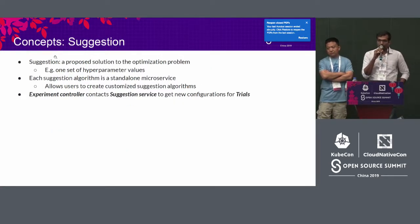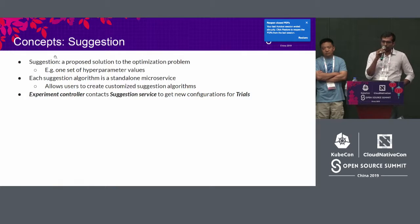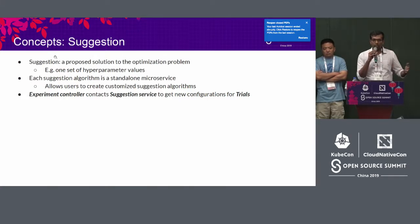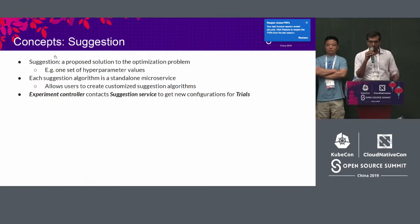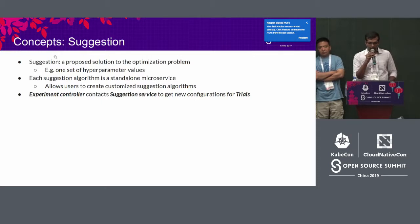The second concept is a suggestion. Once a user submits the experiment config through the Kubernetes API, the experiment controller picks it up and contacts the right suggestion service. A suggestion is one proposed solution to the optimization problem — based on the search space and user settings, the suggestion service provides one proposed solution. Each suggestion algorithm is a standalone microservice, meaning you can add it during runtime without affecting already-running experiments, and it allows users to create customized suggestion algorithms.